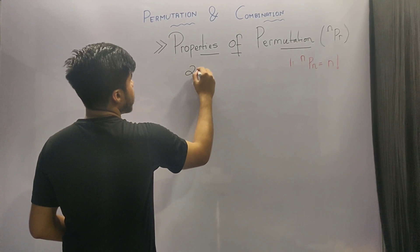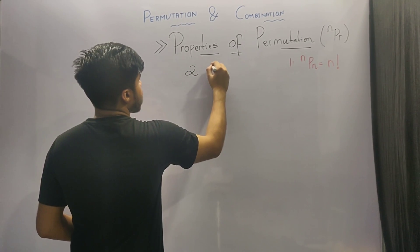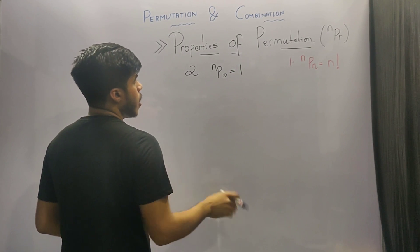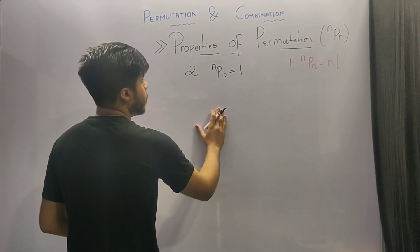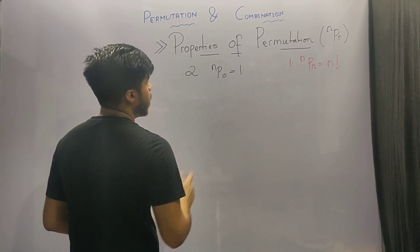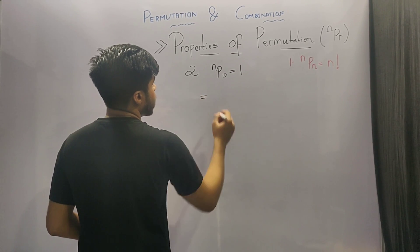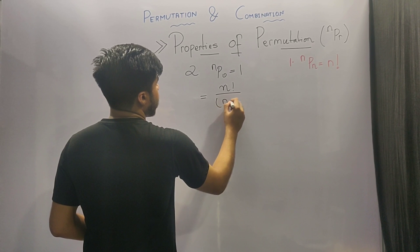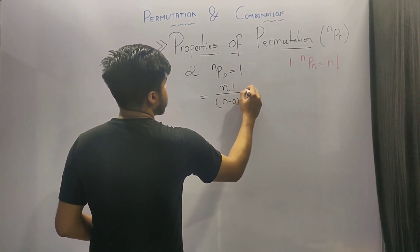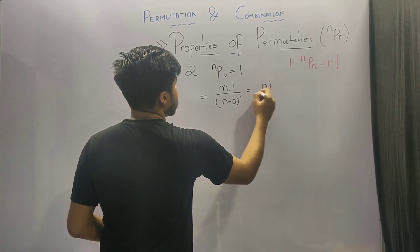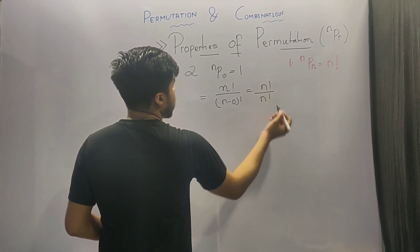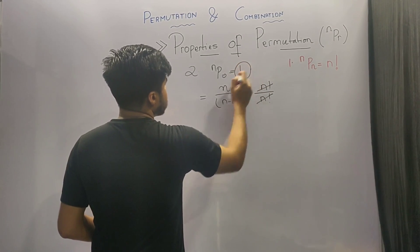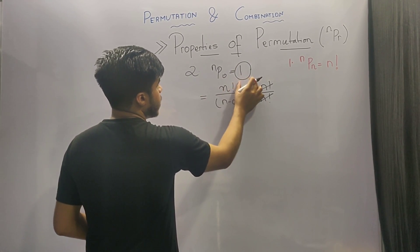The second property of permutation is that nP0 is equal to 1. Putting it in the formula of nPr we get n factorial upon n minus 0 factorial, which is equivalent to n factorial upon n factorial. After cancelling both the n factorials we get the answer as 1. So nP0 is indeed equal to 1.